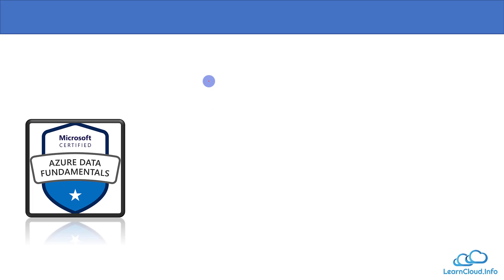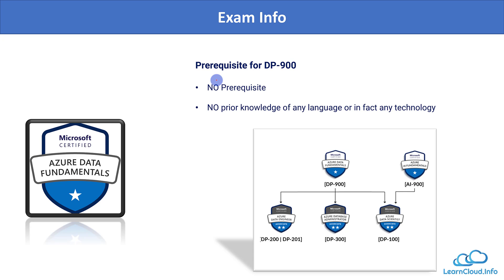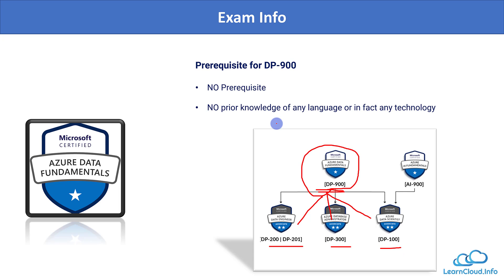There is absolutely no prerequisite for the DP-900 exam — it is a fundamental, basic exam. After completing it, you can move to the data engineer, administrator, or data scientist path. That said, this exam is also not mandatory before taking DP-200, DP-300, or DP-100. No prior knowledge of Python, Java, PowerShell, or any other language or technology is required. DP-900 will simply tell you what different types of databases exist and how to implement them in Azure.